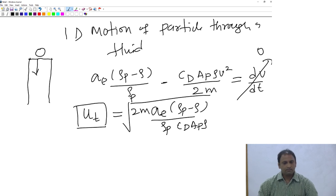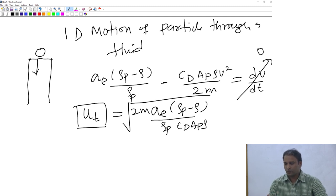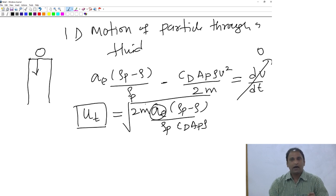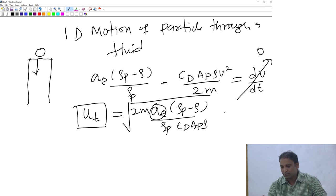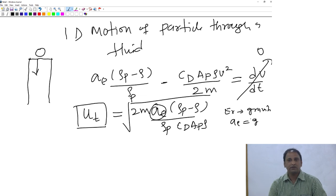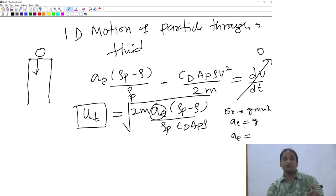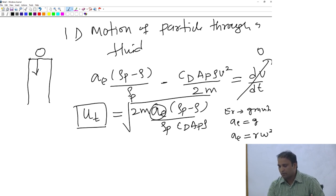We talked about two different cases. A_e is the acceleration due to the external force - it could be any external force. If you take the simple case of gravity, A_e is g, the acceleration due to gravity. And if your external force is centrifugal force, you would replace A_e with r·ω².